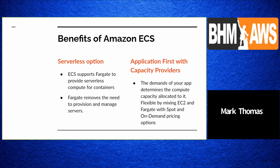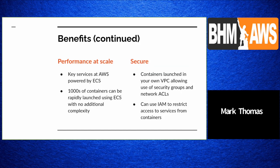Capacity providers allow you to define a strategy for how you want to deploy your resources on an ECS cluster. The demands of your app determine the compute capacity allocated to it. You can mix and match EC2 and Fargate, and also take advantage of spot pricing in addition to on-demand. Key services at AWS are powered by ECS.